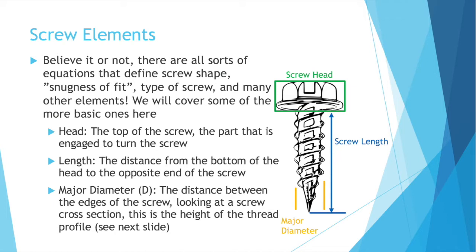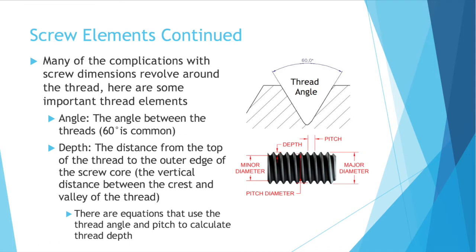Most people are pretty familiar with the head of a screw — that's the top of the screw, the part that is engaged to turn the screw. The length is actually the distance from the bottom of the head to the opposite end of the screw, so it's not the total length, it's just the length of the thread typically. Then you have the major diameter — that's the largest diameter on the screw from the very edge of the thread to the other edge of the thread on the other side. When looking at just the thread profile, it's the height from the crest of one thread to the other on the opposite side.